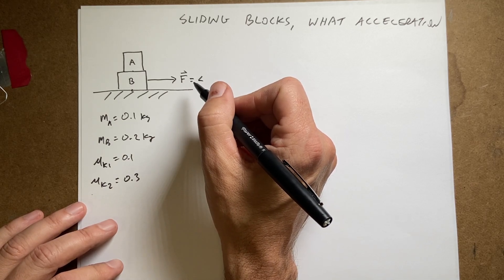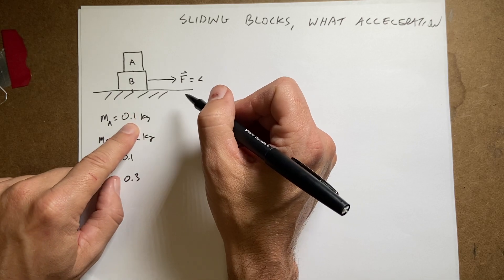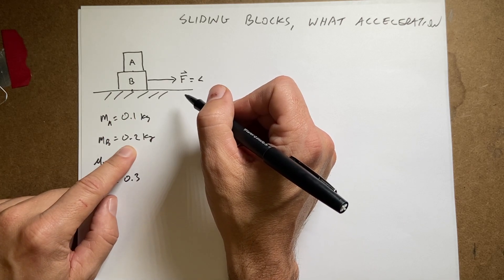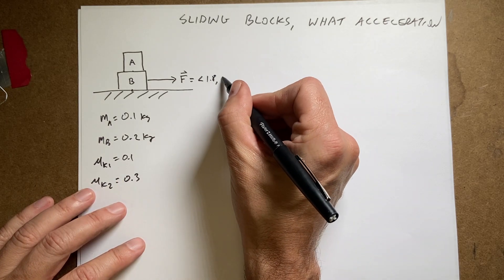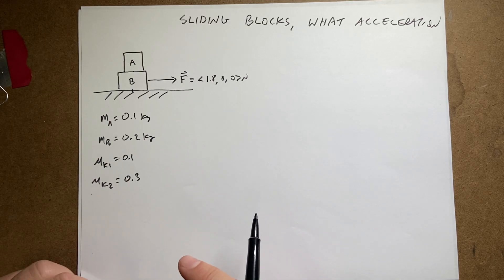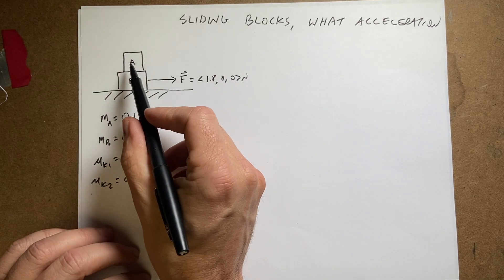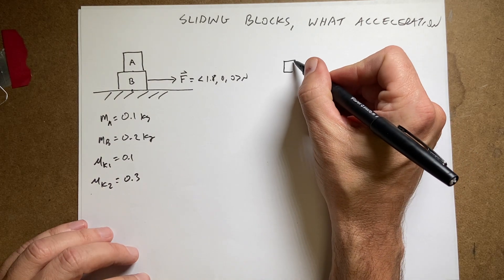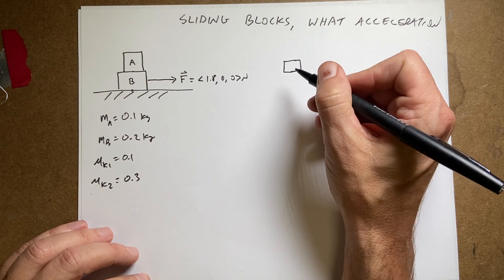I don't want to pull too much. So let's say 1.8 newtons. Okay, now the first thing I'm going to do is to draw a force diagram for block A. So here's A. So what forces are acting on block A?